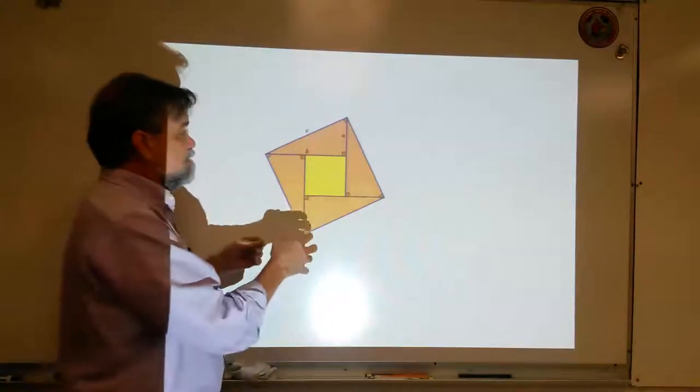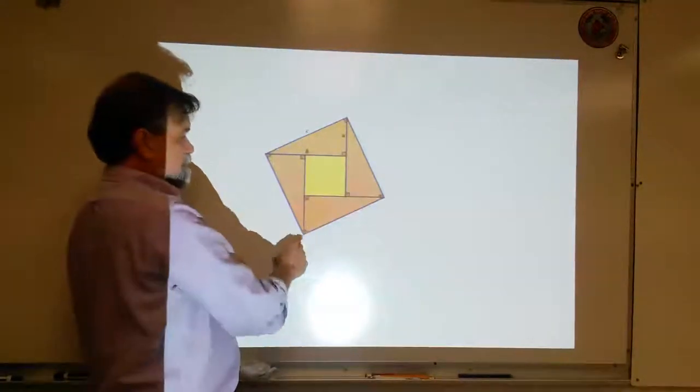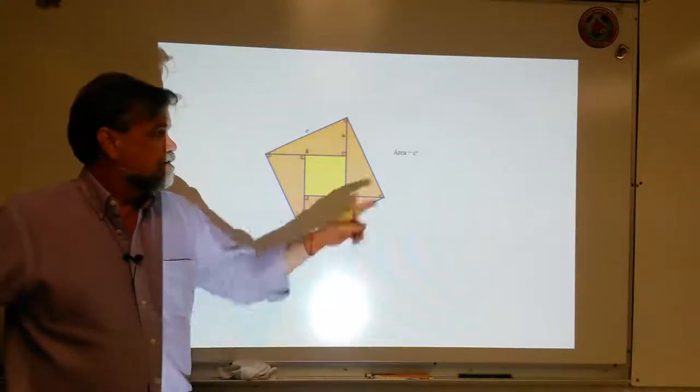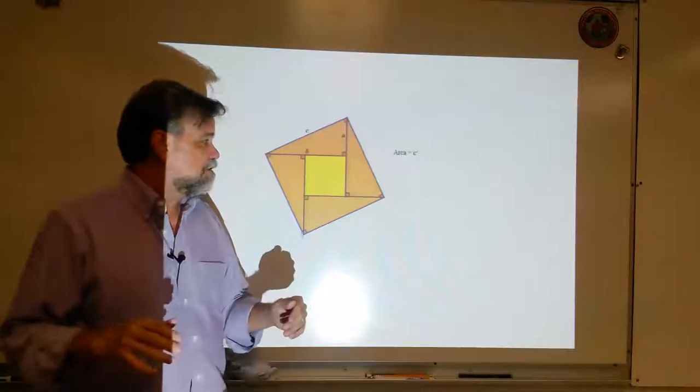And so, what you see is, you have a square that is C, C, C, C. So, that means the area of that square is C squared. I hope we're all together so far.